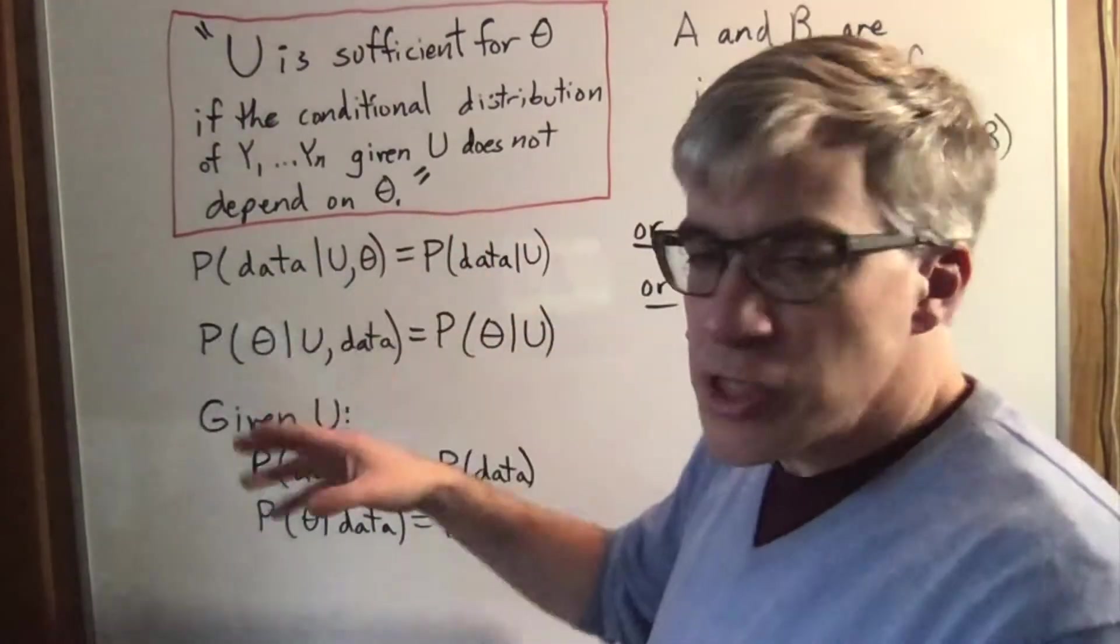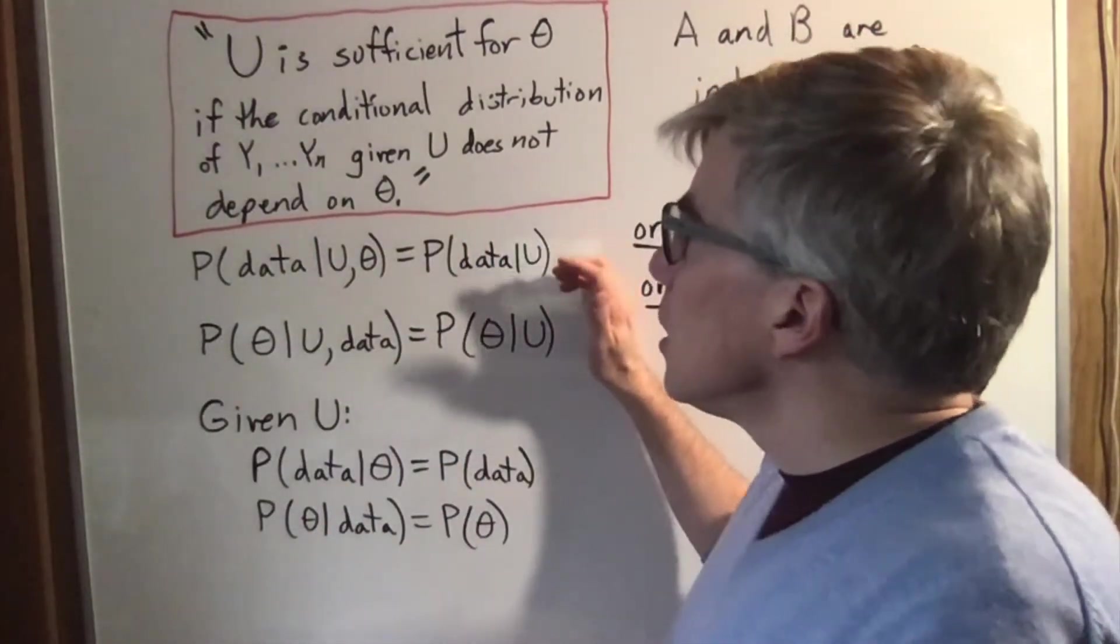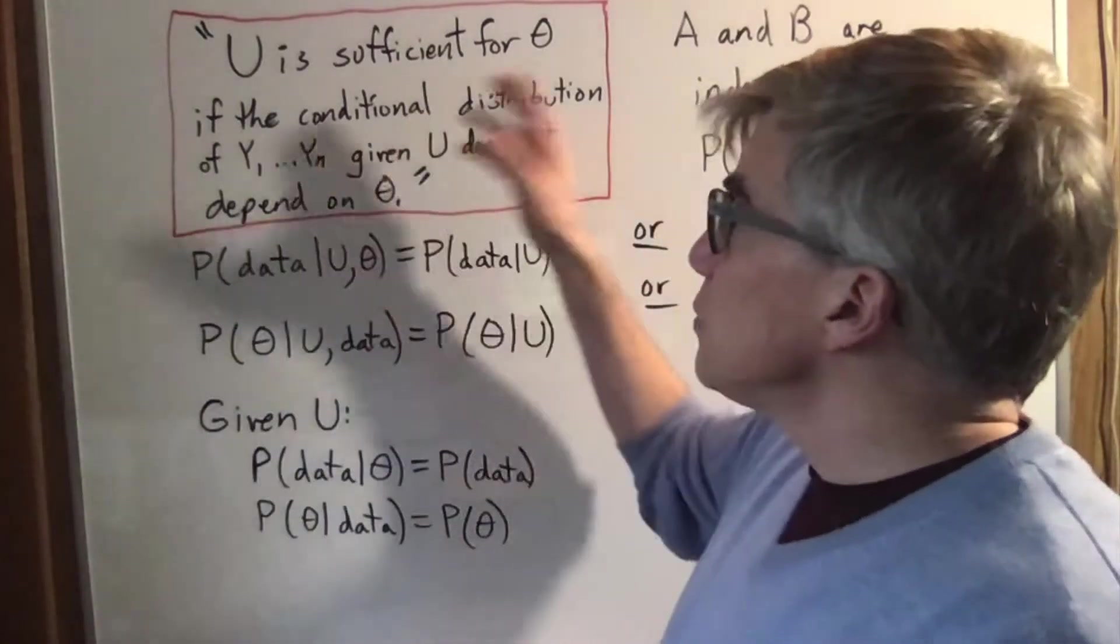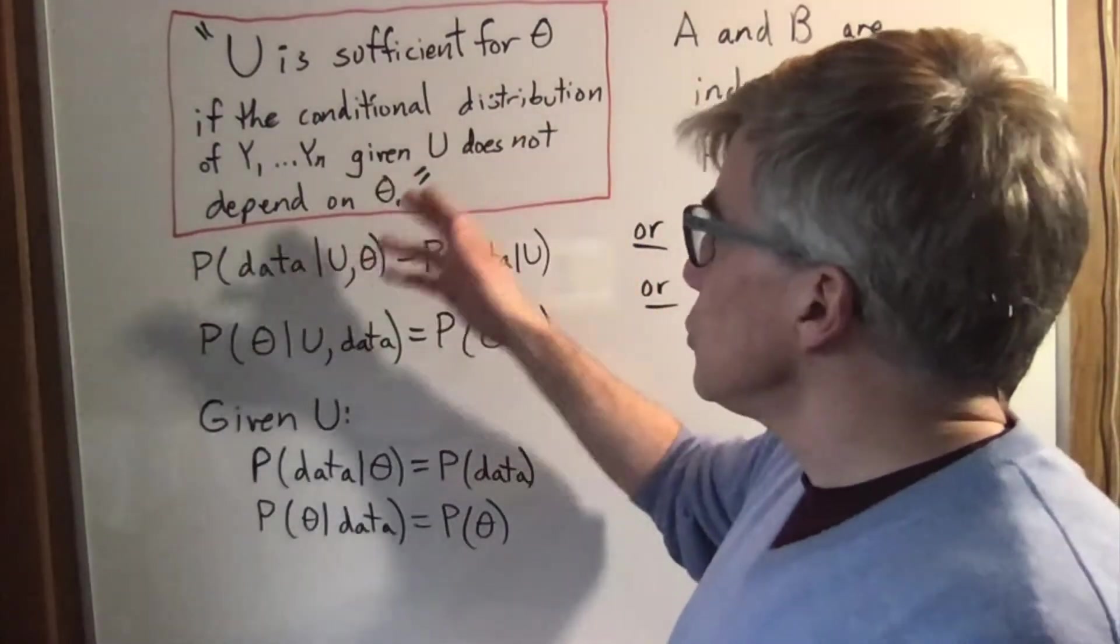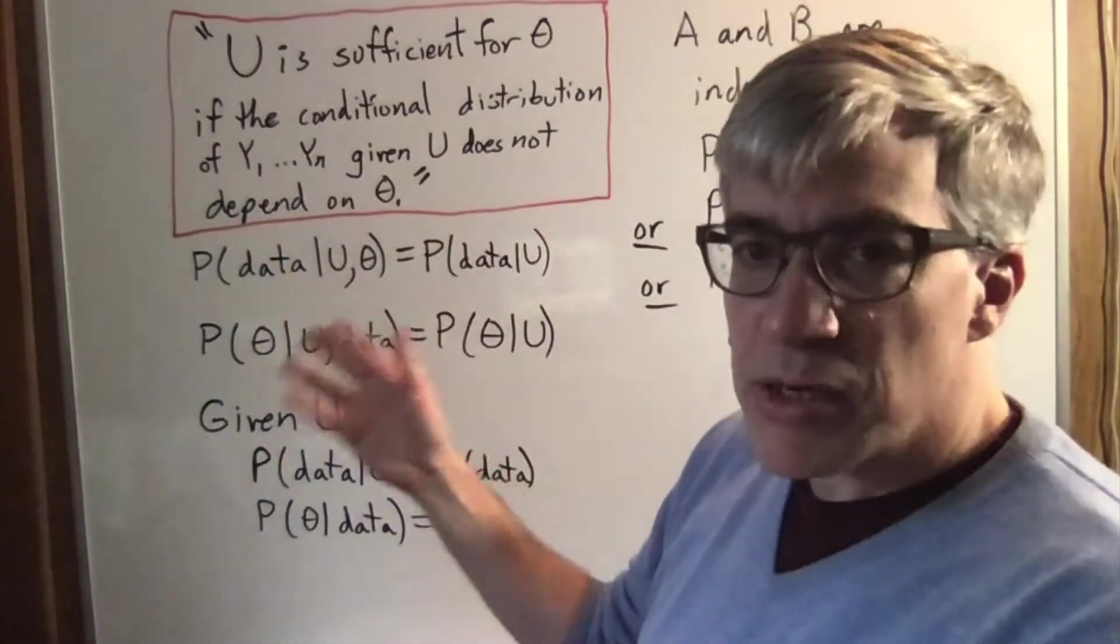What's going on with the definition of sufficient statistic in probability and statistics? They say U is sufficient for theta if the conditional distribution of the Y1 to Yn given U does not depend on theta.